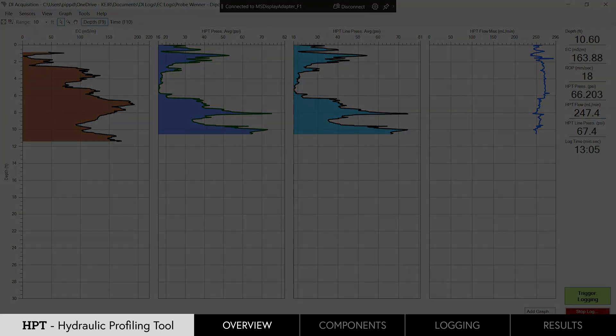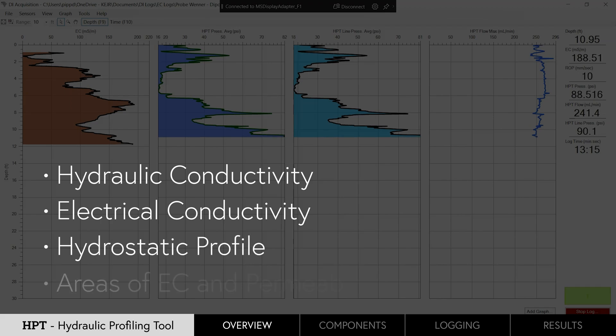The logs can indicate hydraulic conductivity, electrical conductivity, hydrostatic profile, and areas of EC and permeability anomalies.